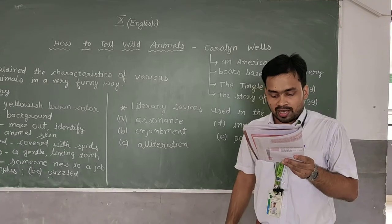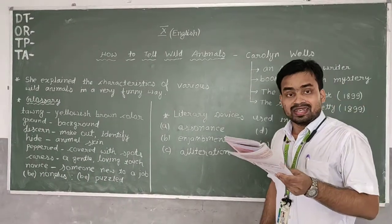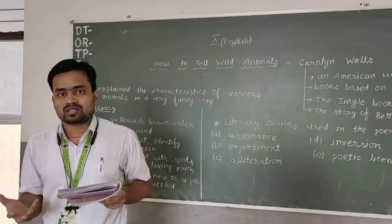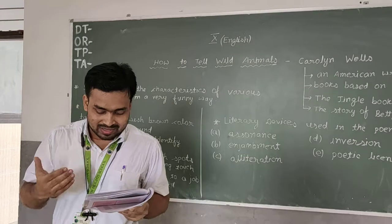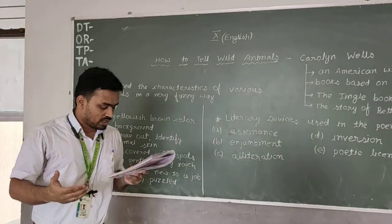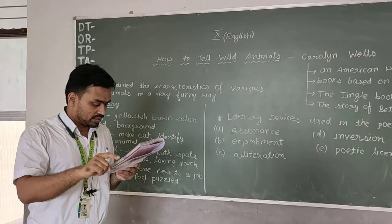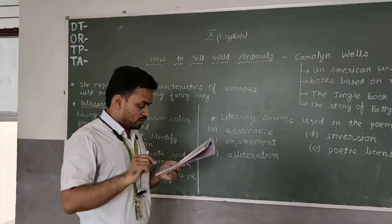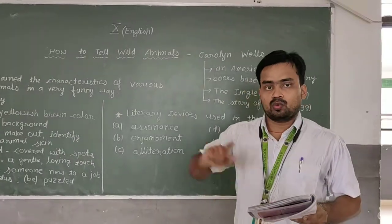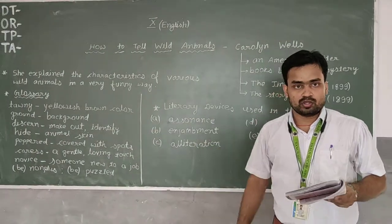Now, talking about the figures of speech, as you can see, alliteration is used in line number 3 in the third stanza. Alliteration means repetition of consonant sound. Here you can see, H is a consonant sound. So repetition of consonant sound, alliteration. And assonance is in the very first line. Repetition of O sound. Strolling forth, walking casually. Again, I will tell you to look into that glossary to identify the words.